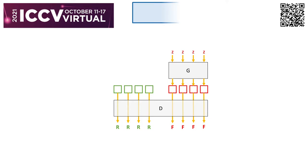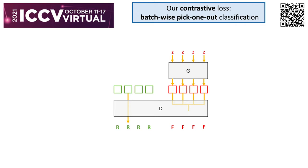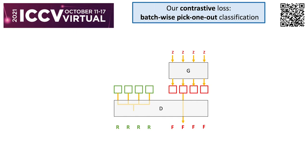In terms of the loss, traditional adversarial losses are formulated as sample-wise binary classification, while our contrastive loss is formulated as batch-wise pick-one-out classification instead. In case one — one real versus a batch of fakes — the loss is a cross-entropy between the discriminator prediction in a batch and a one-hot ground truth, where the one-hot indicates the only one real outlier.